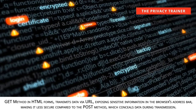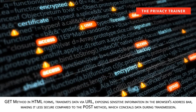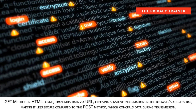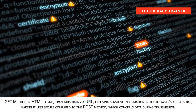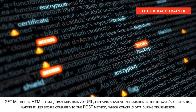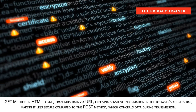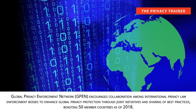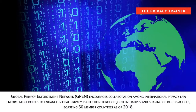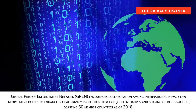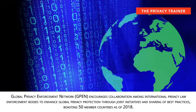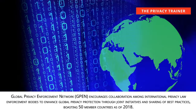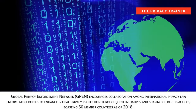GET method in HTML forms. Transmits data via URL, exposing sensitive information in the browser's address bar, making it less secure compared to the POST method, which conceals data during transmission. Global Privacy Enforcement Network, GPEN. Encourages collaboration among international privacy law enforcement bodies to enhance global privacy protection through joint initiatives and sharing of best practices, boasting 50 member countries as of 2018.